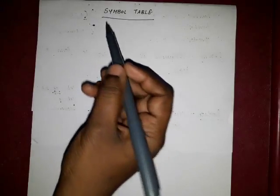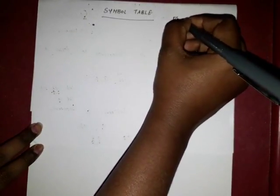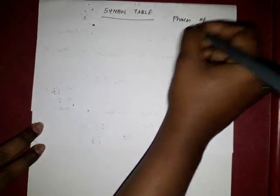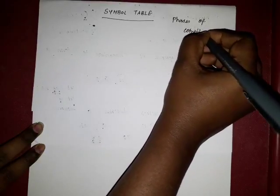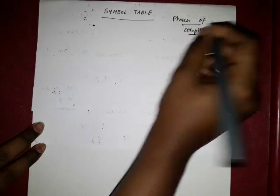Welcome to our channel. Today I am going to deliver a lecture on symbol table. Symbol table is the main concept in the phases of a compiler. A compiler is used to convert high-level language into low-level language. In this conversion process, there are six important phases: lexical analysis, syntax, semantic, intermediate code generator, code optimizer, and code generator.